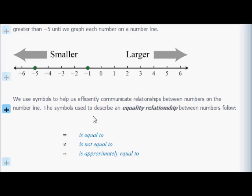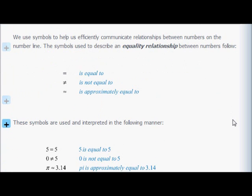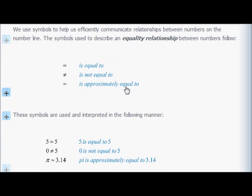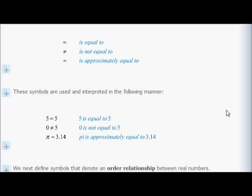Now we're also going to talk about equality relationships. Is something equal to something else? Is it not equal to something else? Or is it approximately equal to something else? Remember we had those estimates of pi, which are approximately equal to pi but not actually equal to pi. Five is equal to five. Zero is not equal to five. Pi is approximately equal to 3.14.